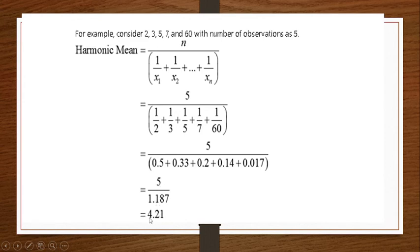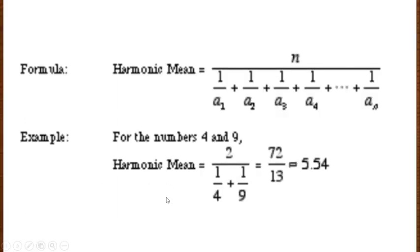So 5 divided by 1.187 is 4.21. Then another example I have taken. Here you have numbers as 4 and 9. How many numbers are there students? 4 and 9 is 2 numbers are there.